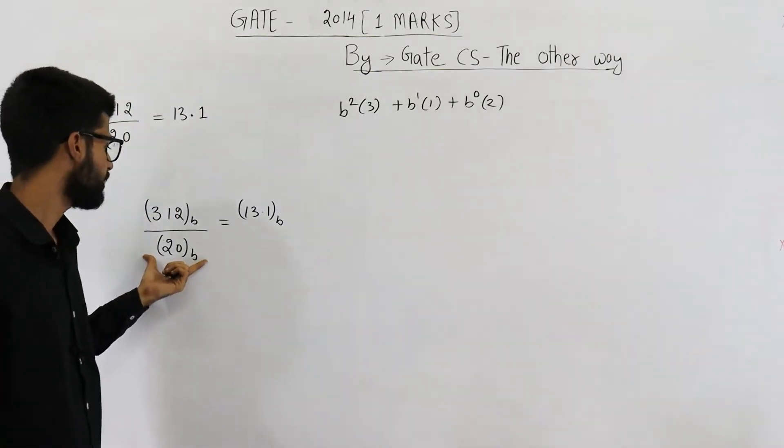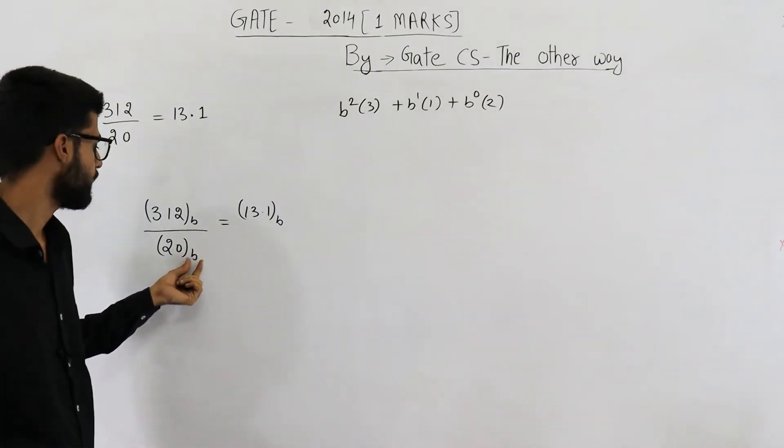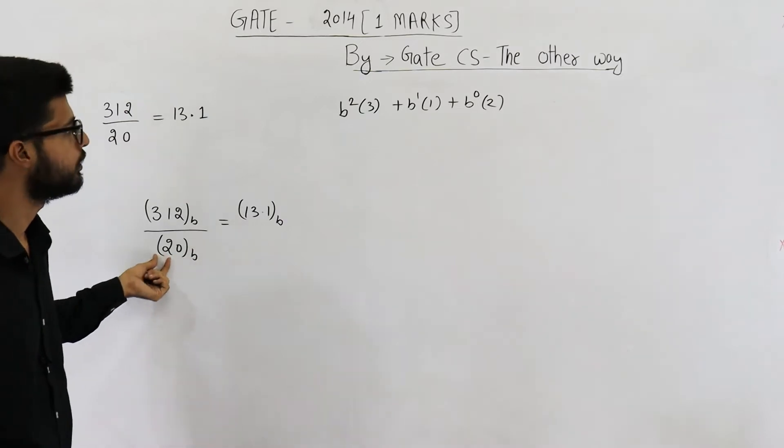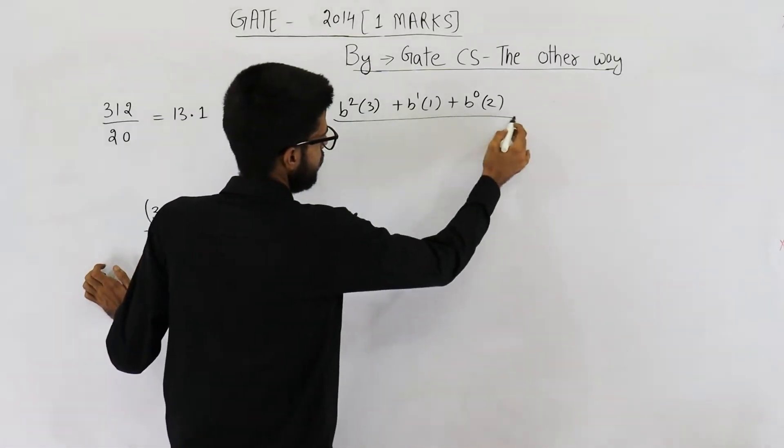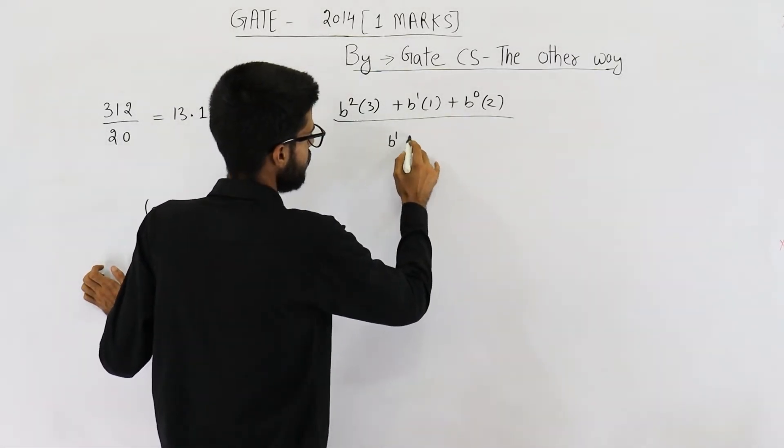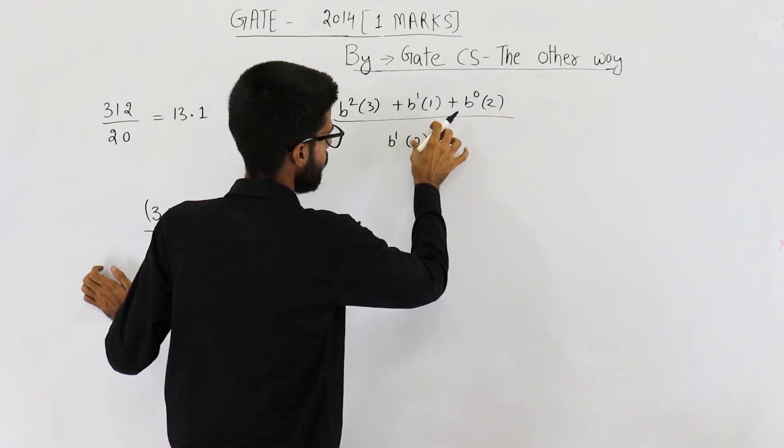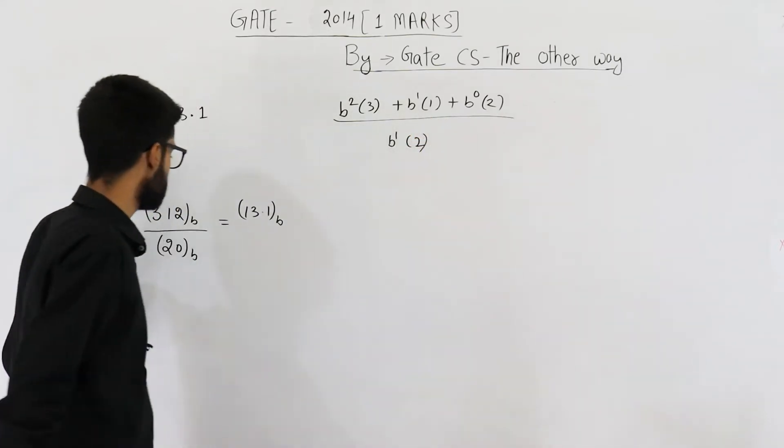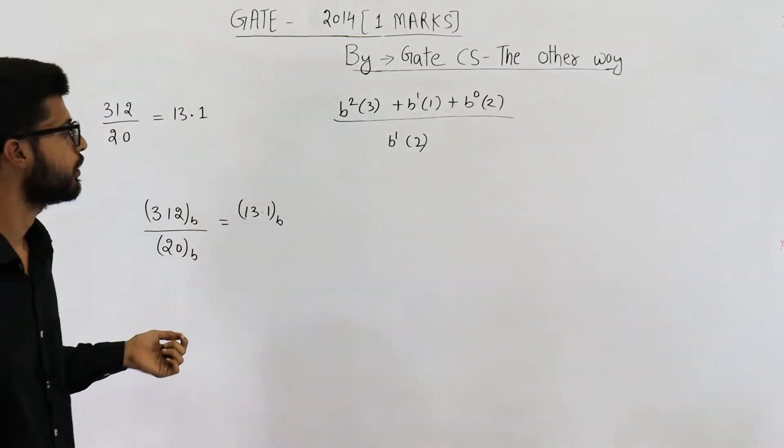If you convert this number into decimal, you will get b power 1 into 2 plus b power 0 into 0 that will be 0 only.